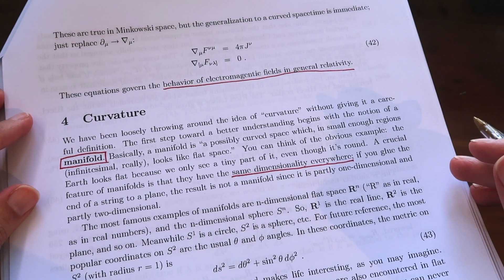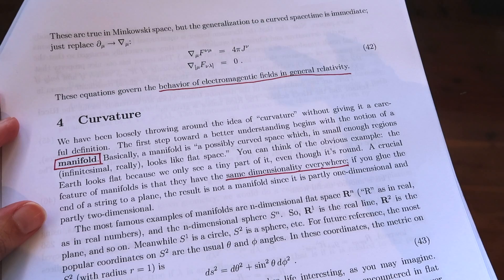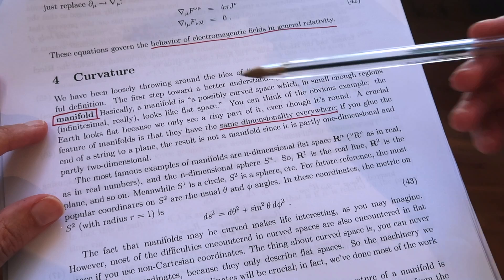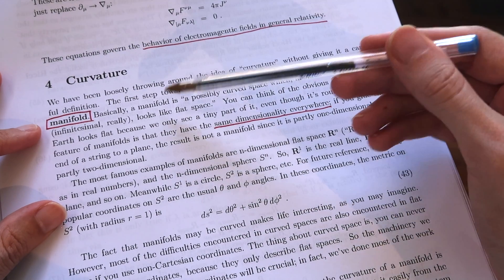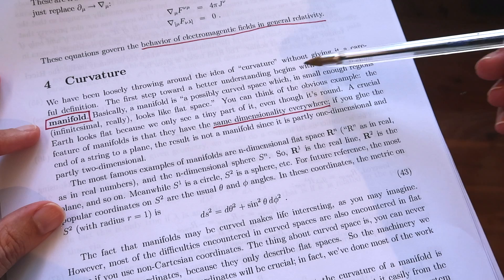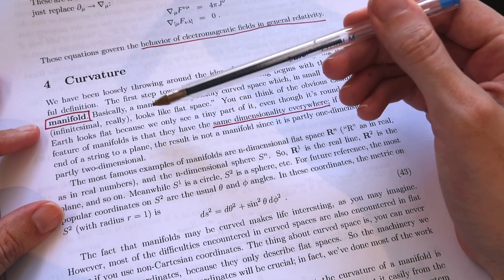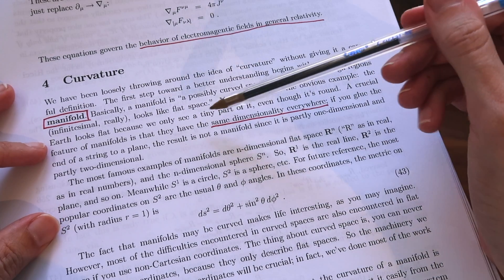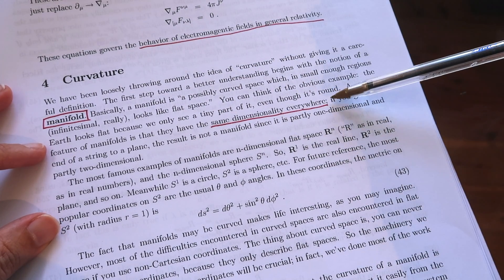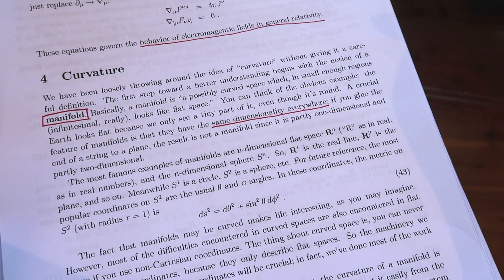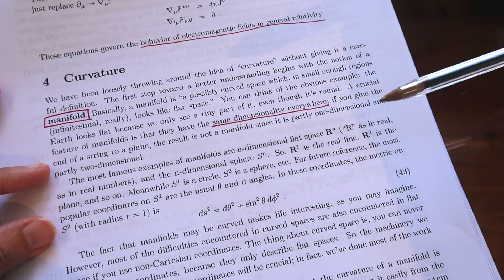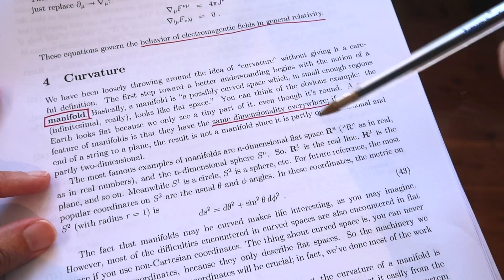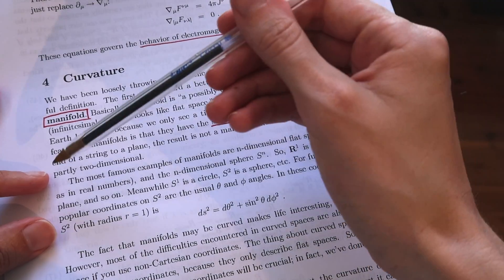GR is a theory of gravity and of geometry so it's important to understand what we mean when we talk about curvature and manifolds. Here it says basically a manifold is a possibly curved space which in small enough regions looks like flat space. The important thing about manifolds is that they have the same dimensionality everywhere. Dimensionality would be like 2D, 3D, 4D something like that. So a piece of string attached to a plane would not be a manifold since it's partly one-dimensional and partly two-dimensional.